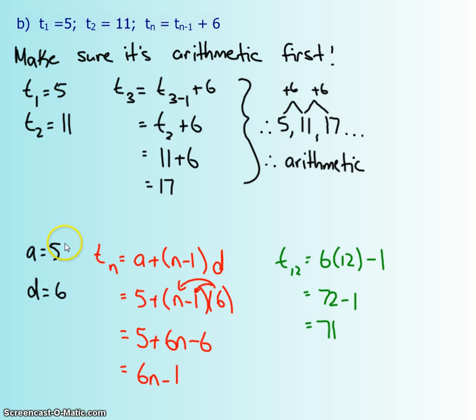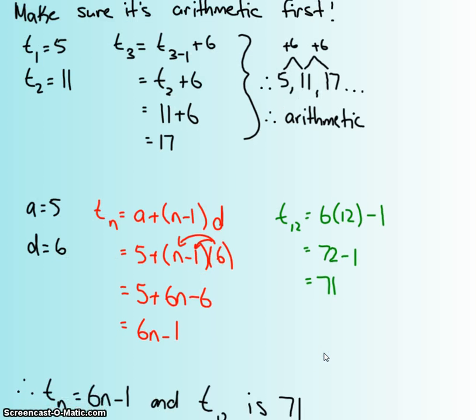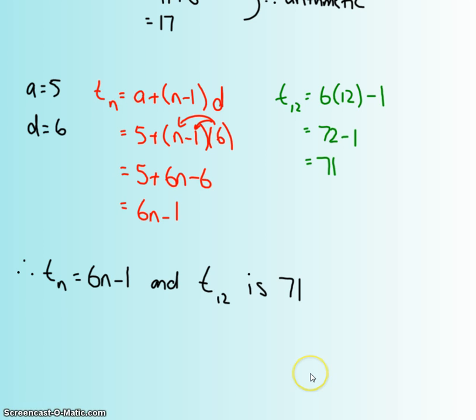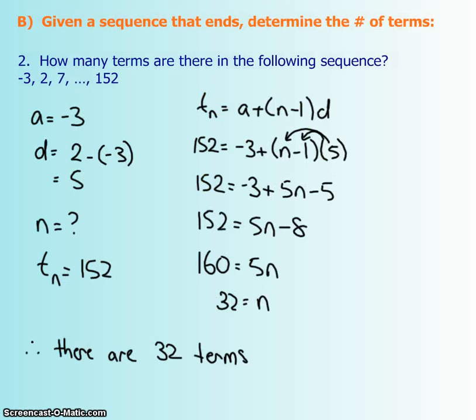So here's the first term. Your d is going up by sixes, so positive six. And then again, we're just going to plug those into the formula, expand, and simplify, and we get t_n equals 6n minus 1. If we wanted to find the 12th term again, we're just going to plug 12 into our n, and then we're going to get our t_12 value, which is 71. It's really easy to actually just plug this into the calculator and just press equals a bunch of times after you add 6, and see if you do land on the 12th number as 71.